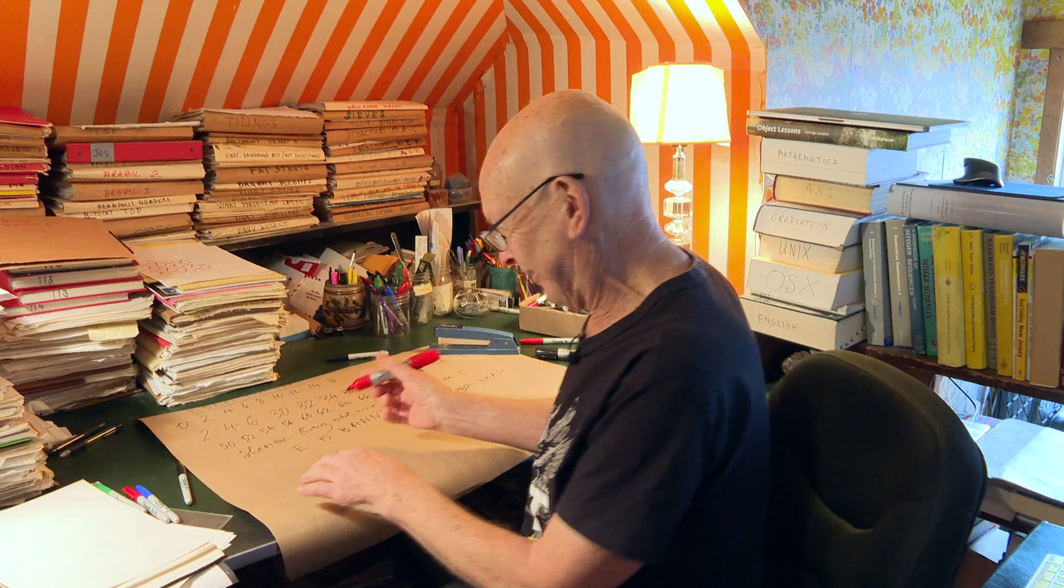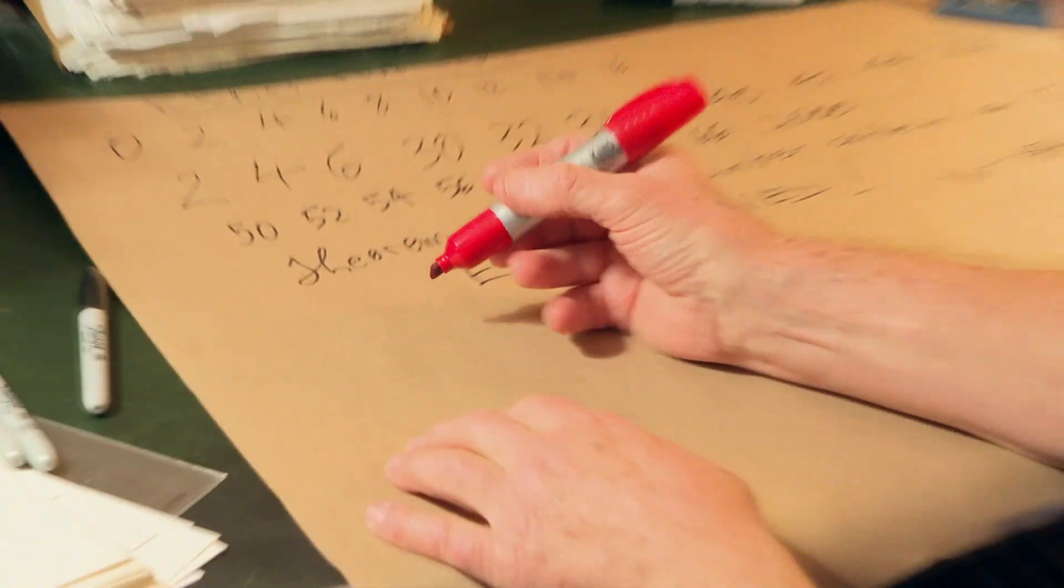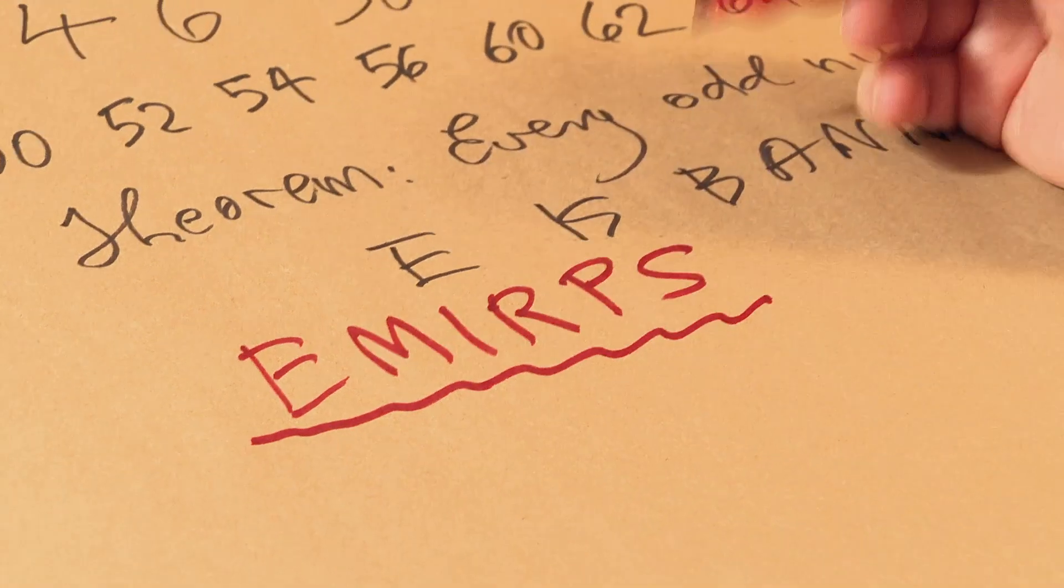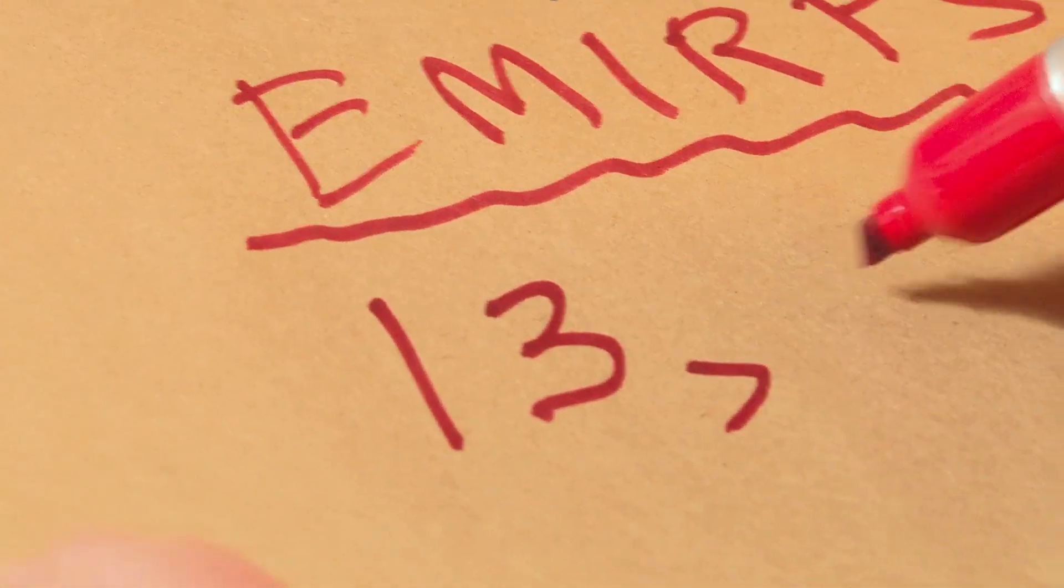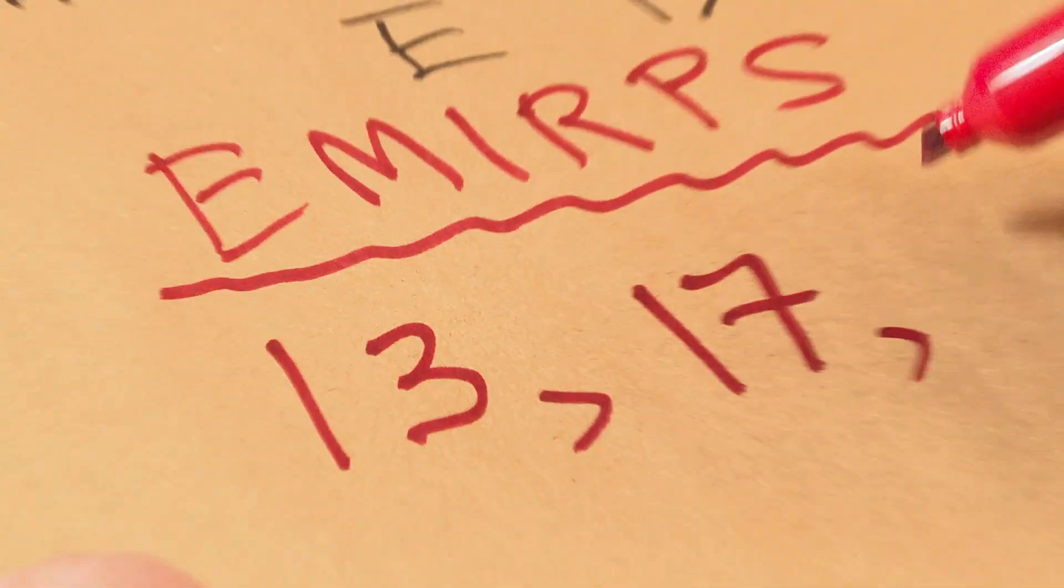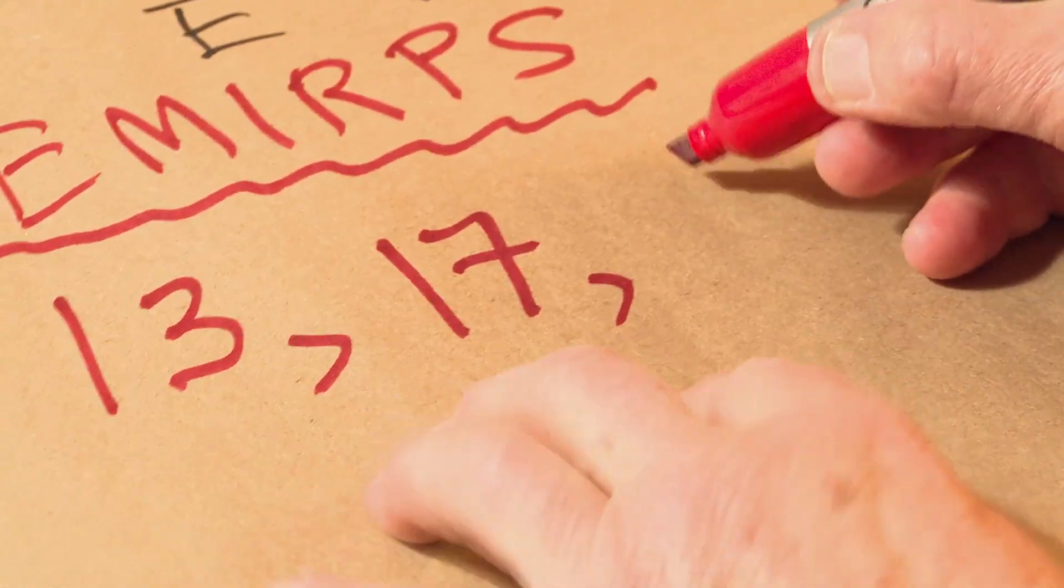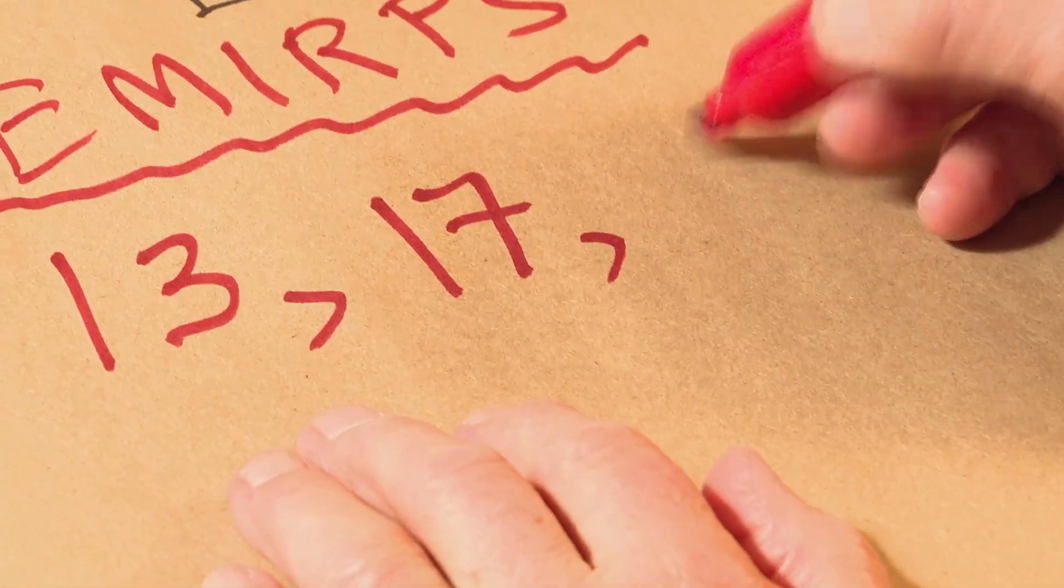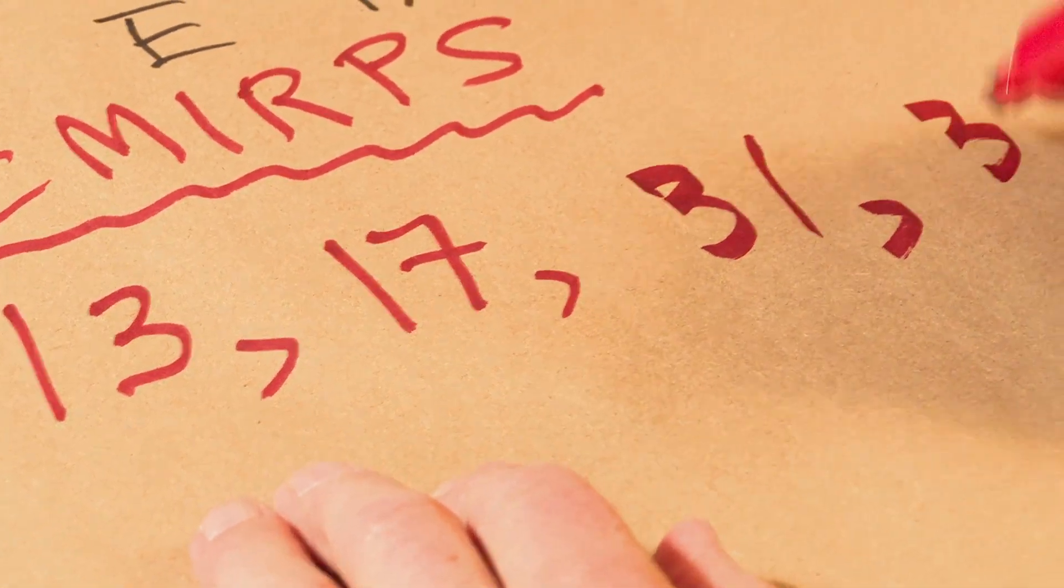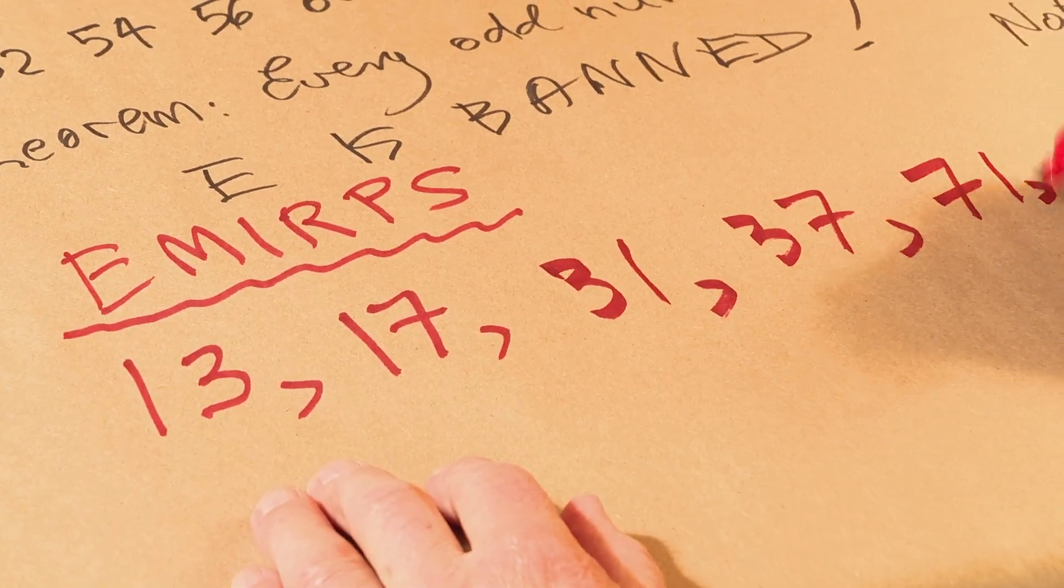Let me show you another one with a name. These are the EMURPS. And again, the name is a hint. And in this case, it's actually a legitimate hint. The EMURPS, as you might guess, well, let me show you what they look like, first of all, and then you can guess. It's 13, 17, then it's not 19, you might have thought I was going to write 19, but it's actually 31, 37, 71. And that's probably enough of a hint.